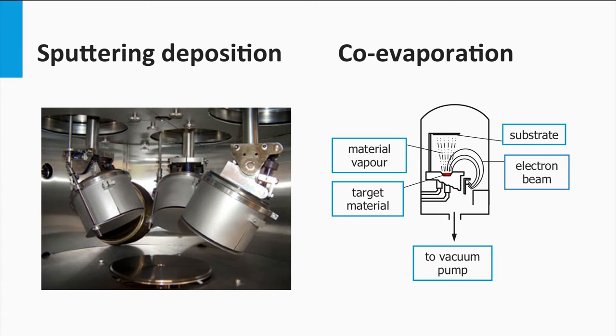First is the sputtering and co-evaporation on a substrate at high temperatures. During the process there is an additional selenium source. During deposition, a CIGS film is formed.